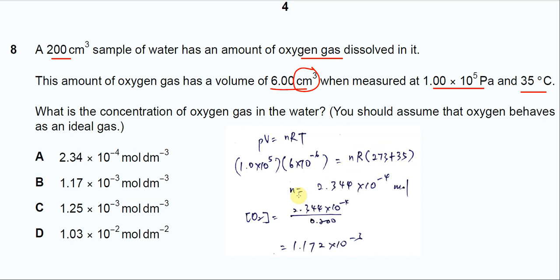So rearrange for the number of moles of oxygen. You should get 2.344 times 10 power negative 4.